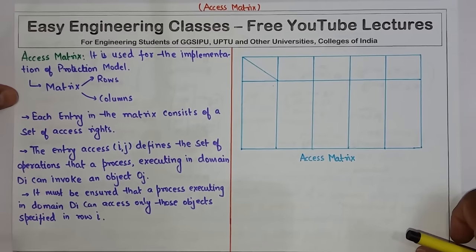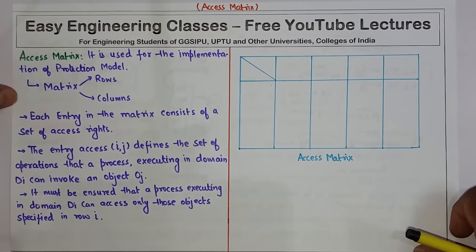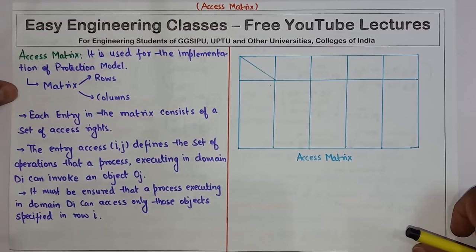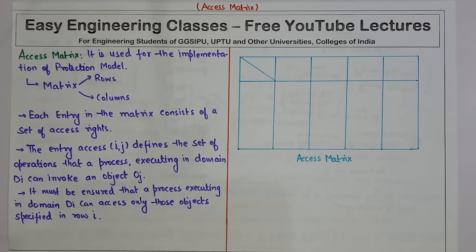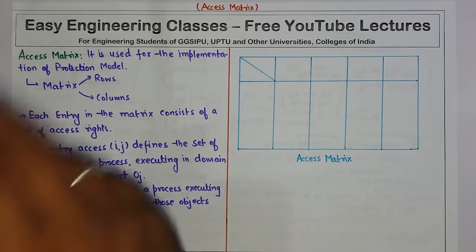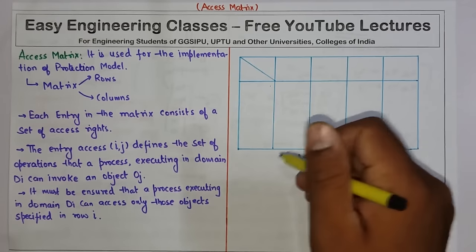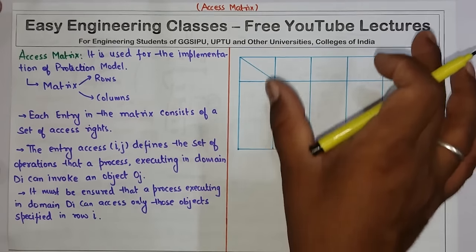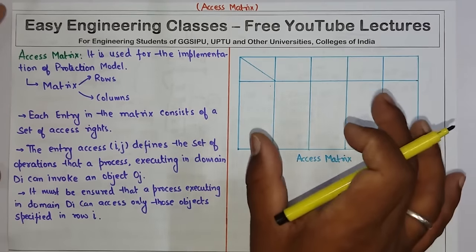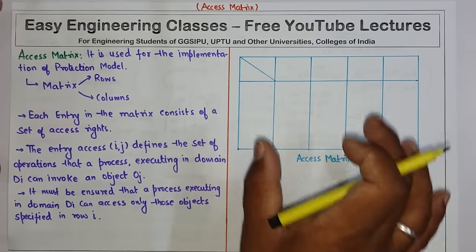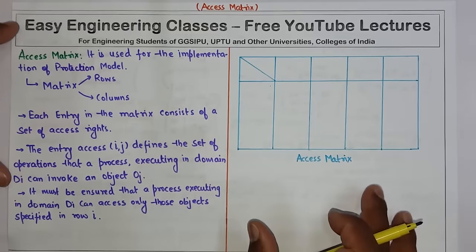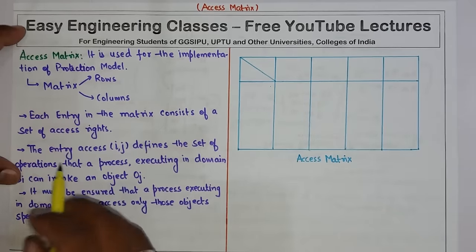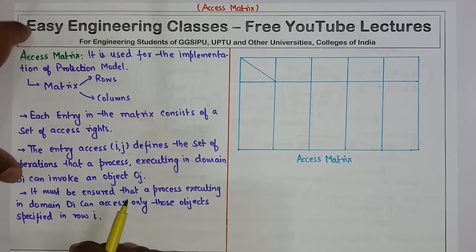Hello everyone. Today in this video we are going to see the access matrix which is used for the implementation of the protection model which we have studied in the previous lecture. We are going to see the entries, how it is filled, what those entries are, and what is the meaning of those entries. First we see some of the theory aspects of the access matrix.